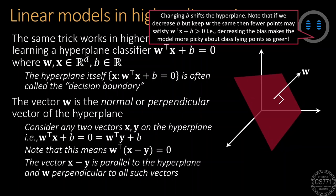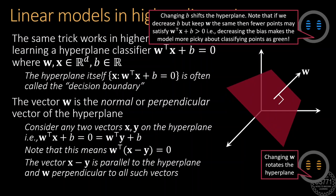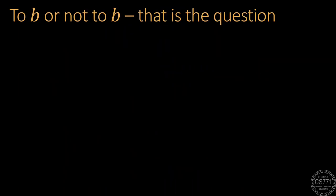Also as before, keeping the bias parameter the same but changing w will rotate the hyperplane.